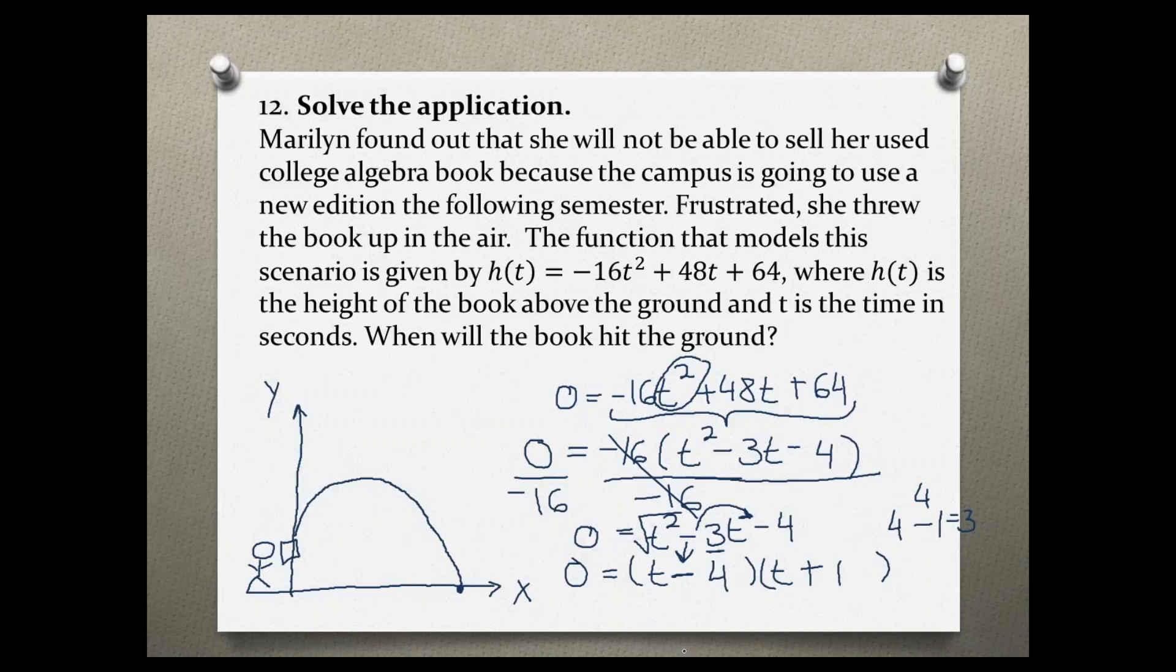And now we can apply the zero product rule. So each of these binomial terms we can set equal to 0.